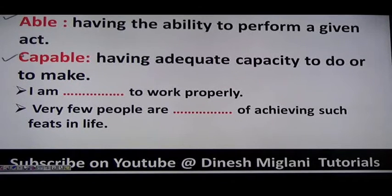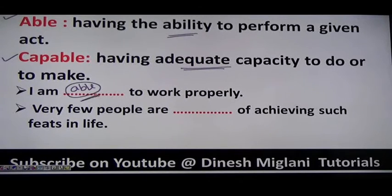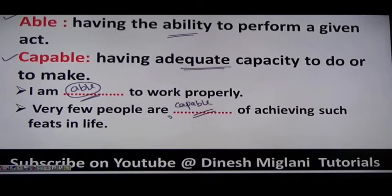Next: able means having the ability to perform. Capable means having adequate capacity. Examples: 'I am able to work properly' — I have the ability. 'Very few people are capable of achieving such feats in life' — concerned with whether the person has all adequate abilities.